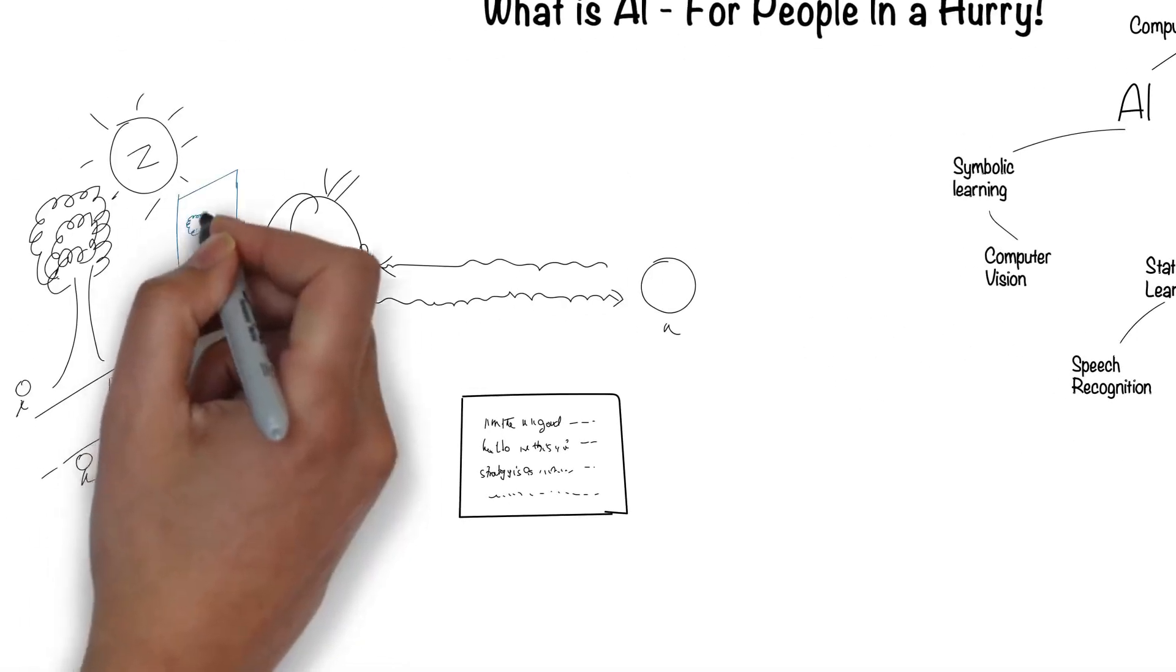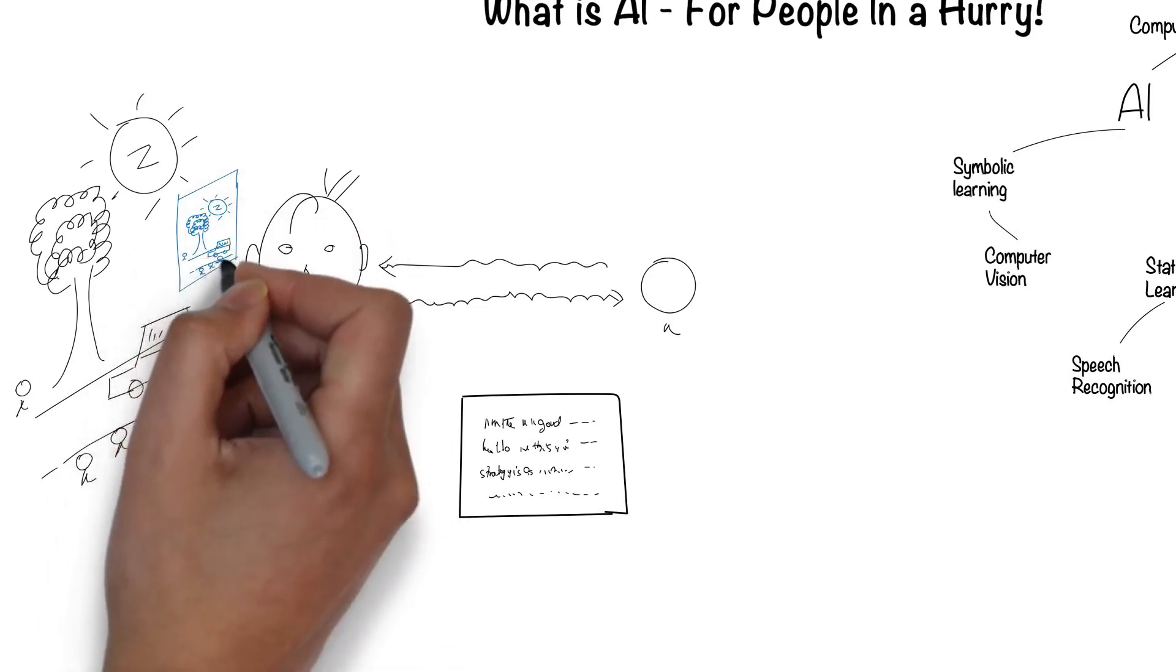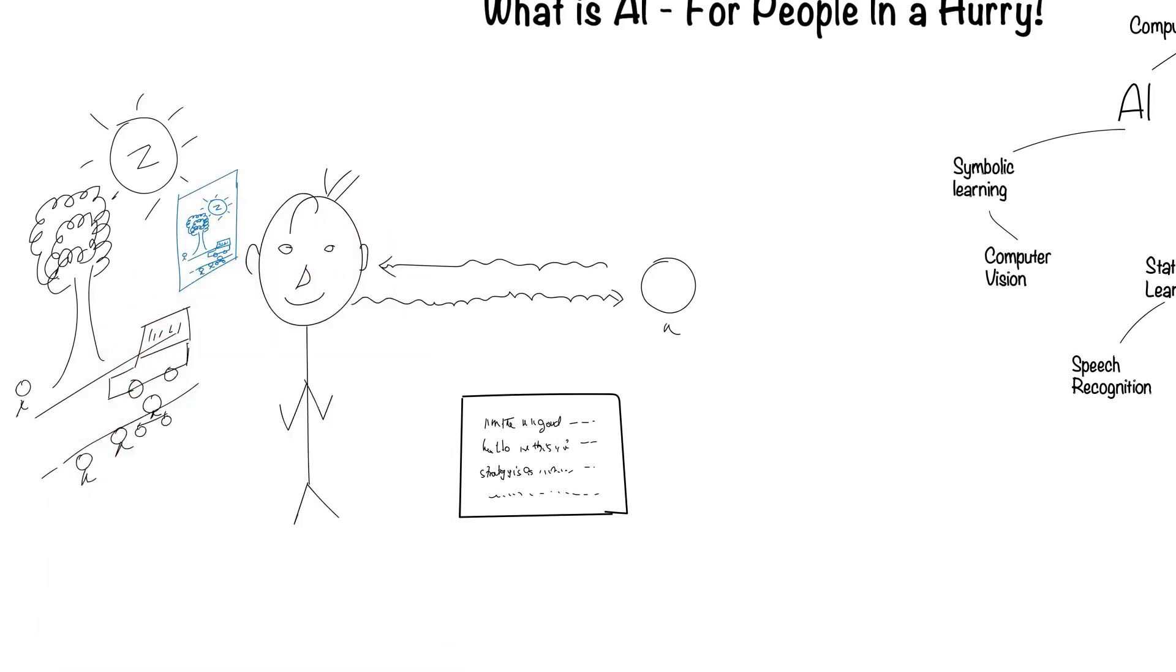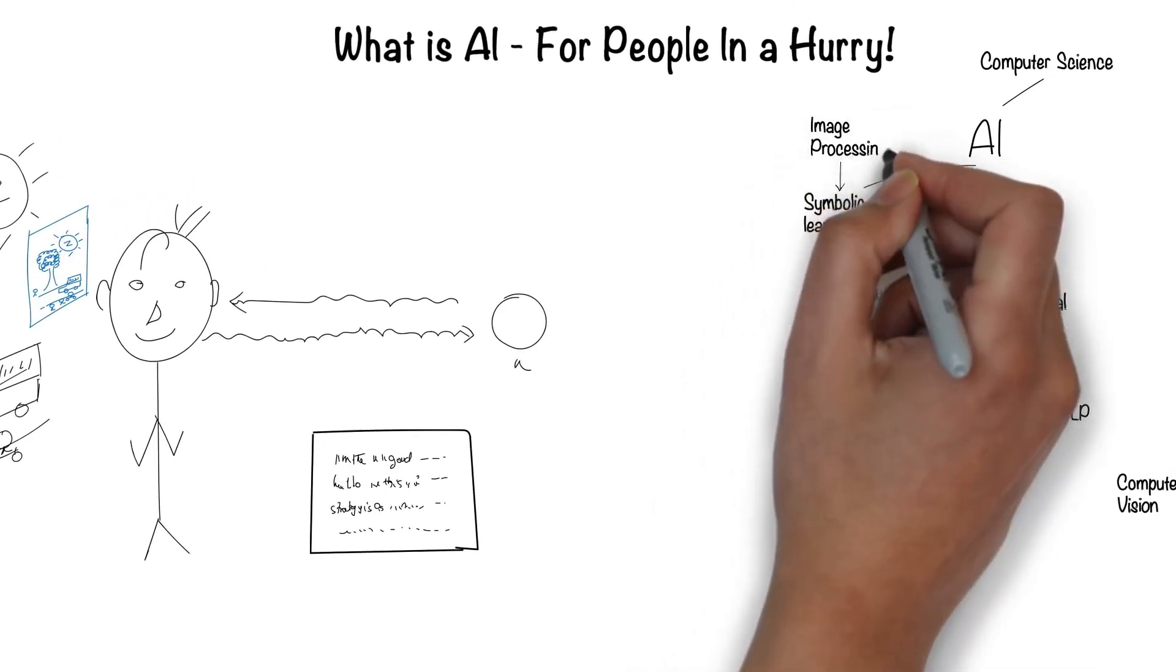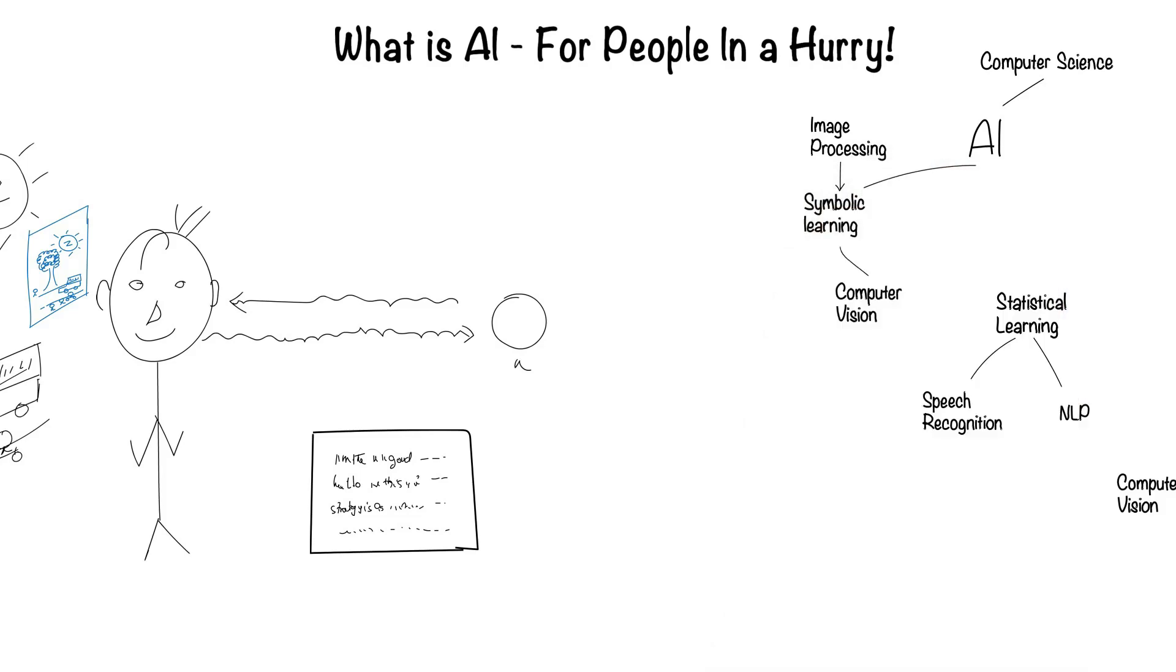Humans recognize the scene around them through their eyes, which create images of that world. This field of image processing, which even though is not directly related to AI, is required for computer vision.